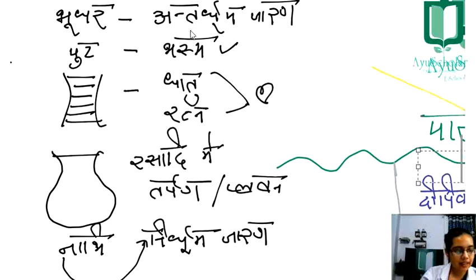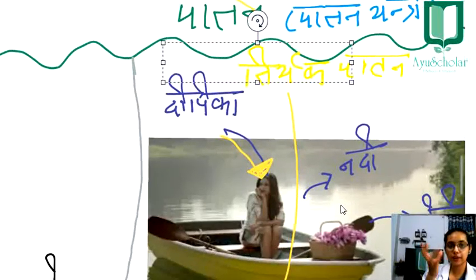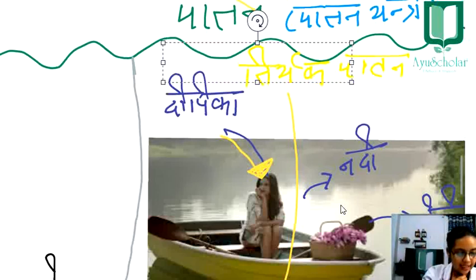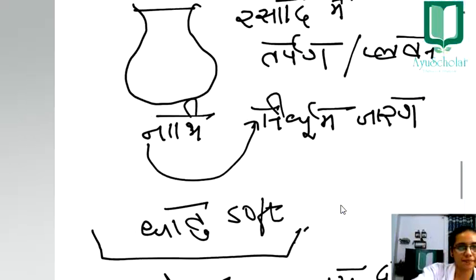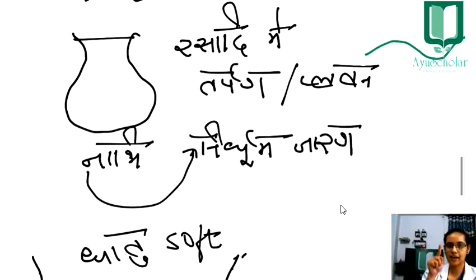After this, next is Ghatt Yantra. Ghatt means Ghada (a pot). Ghada — which is used for Rasadi, Tarpan, and Plawan. So Ghatt Yantra is used in Rasa Shastra for Tarpan and Plawan purposes.